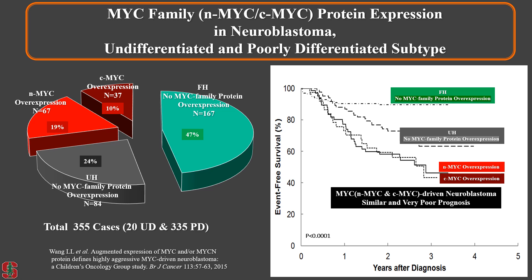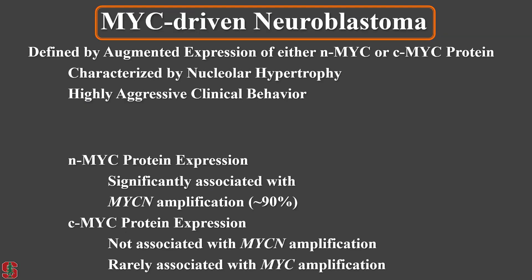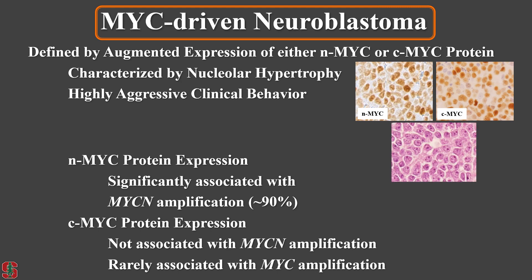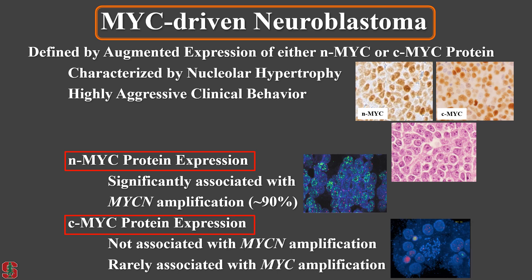We named these tumors MYC-driven neuroblastoma, defined by augmented expression of either N-MYC protein or C-MYC protein. They are characterized by nucleolar hypertrophy and are highly aggressive. Tumors expressing N-MYC protein are significantly associated with MYCN gene amplification — around 90% of MYCN amplified tumors show N-MYC protein expression. In contrast, it is very rare to see C-MYC oncogene amplification in tumors expressing C-MYC protein; there appear to be other mechanisms beyond genomic amplification responsible for C-MYC protein expression in neuroblastoma.